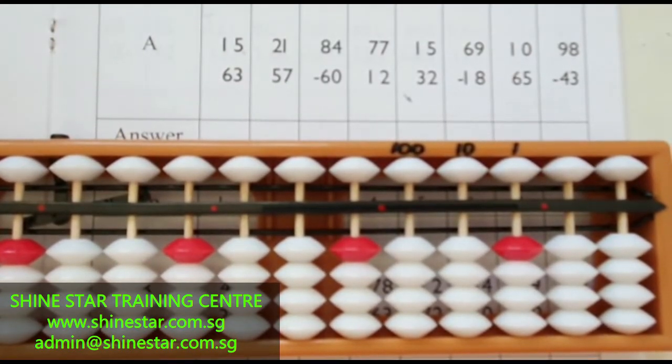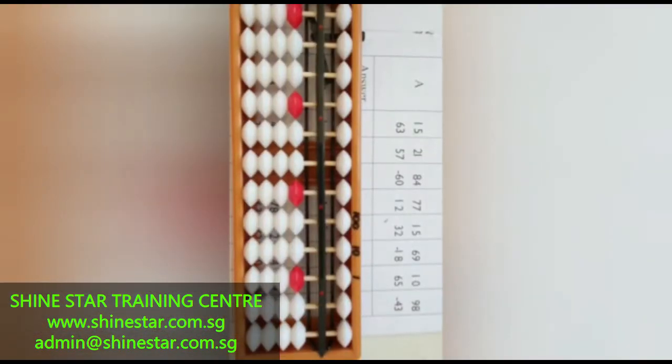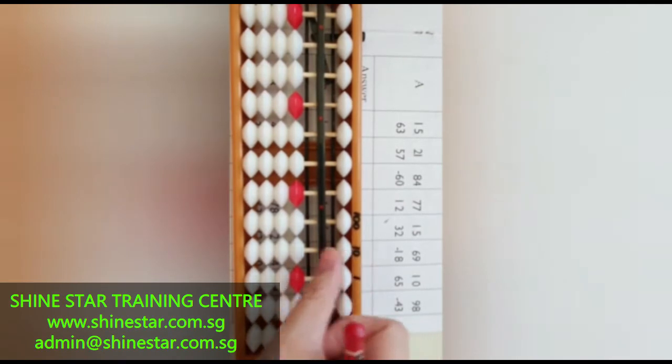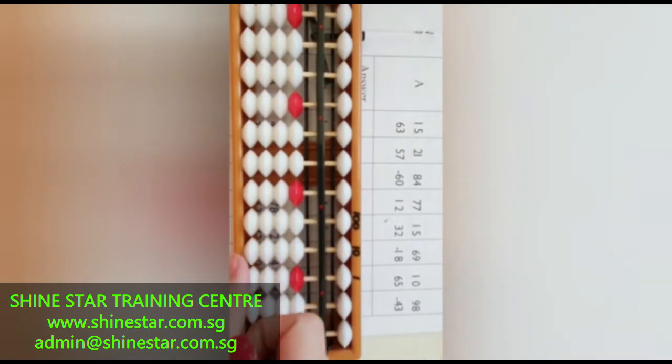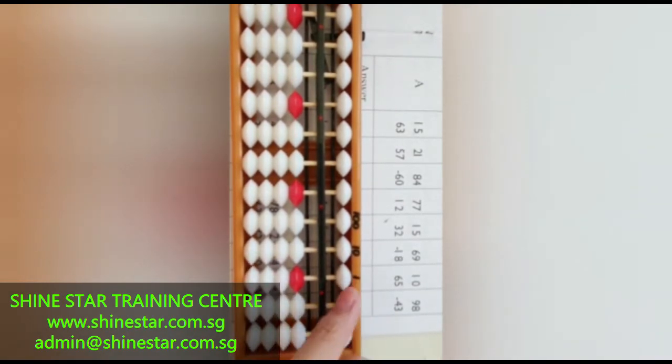What is double-digit? Let's look at the abacus. This column represents tens, while this column represents ones.